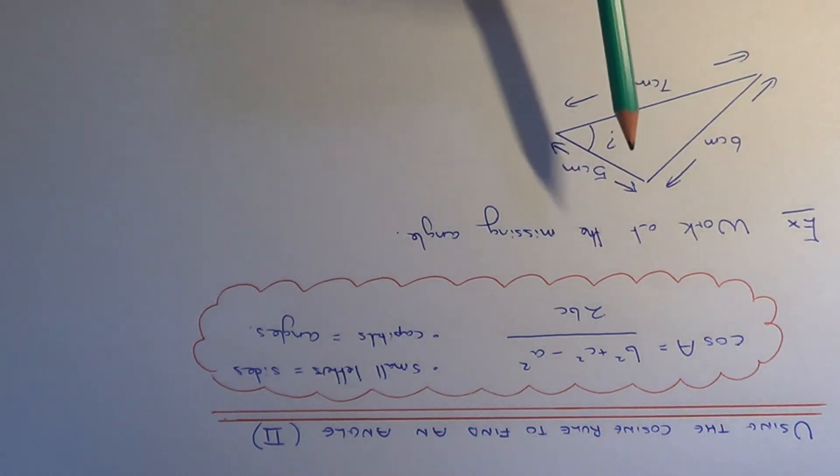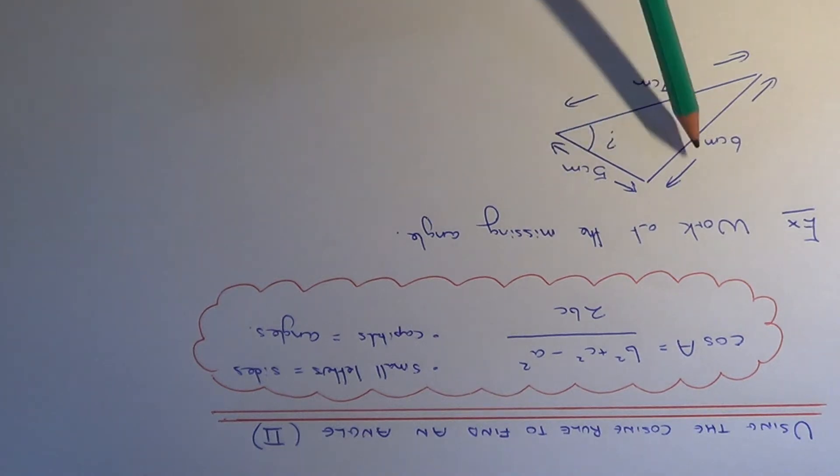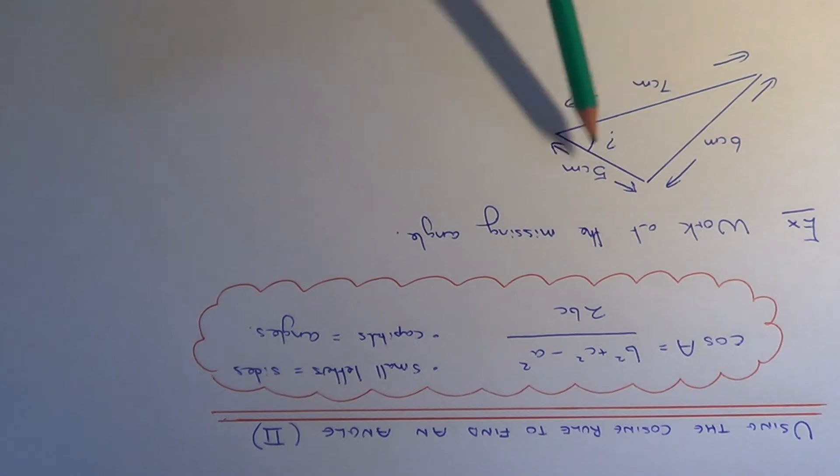So let's have a look at the example here. We have got to work out the missing angle here, and if you notice we are given all three side lengths.